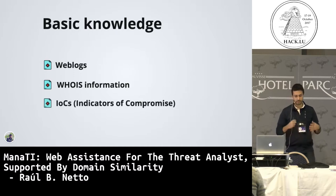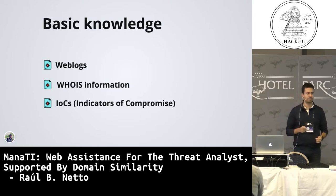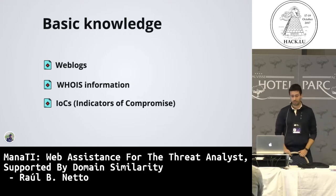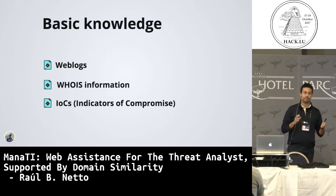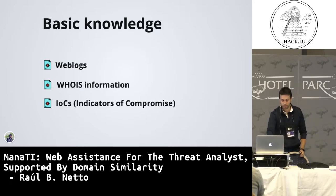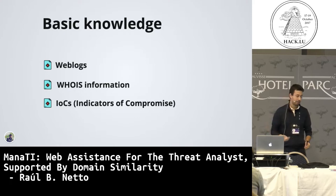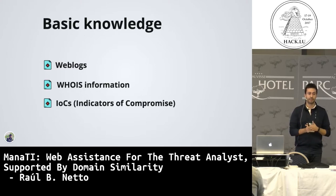And the last term is IOC — Indicator of Compromise. It is an artifact in the computer security area that we can observe in a network or in an operating system that indicates something is happening in your environment. But for this talk, we will use IOCs meaning domain names or destination IP addresses.